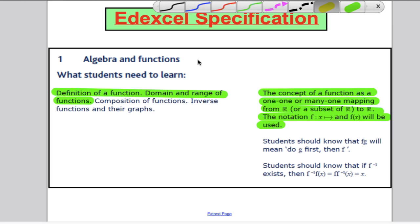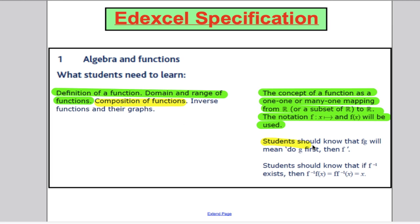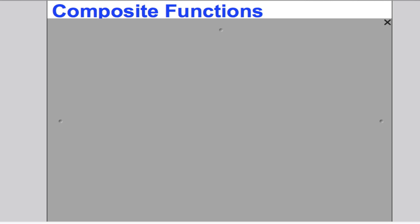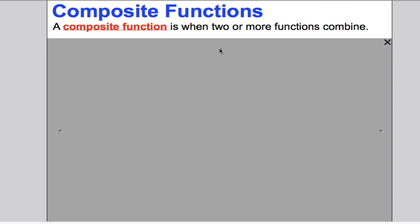In this tutorial we're going to talk about the composition of functions. Students should know that FG means do G first then F — we will talk about what this means. A composite or composition of functions is when two or more functions combine and the result is like one function. Two functions combine and you can think of that combination as one entire function.